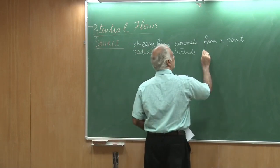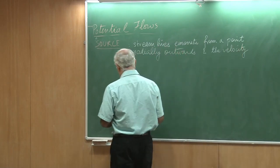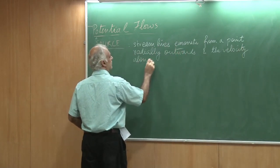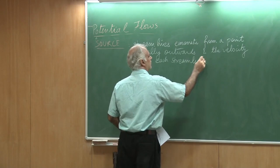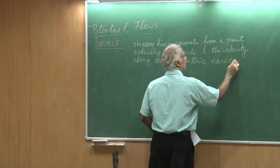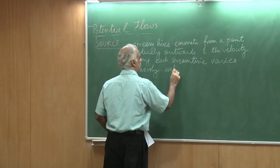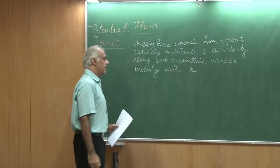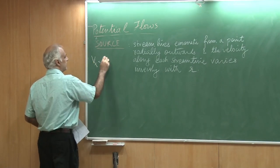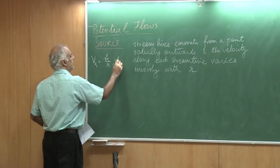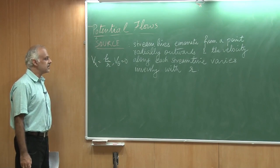And the velocity along each streamline varies inversely with R. So the suggestion is that we can say Vr is essentially K by R and V theta is 0. We are going to use the polar coordinates to describe this flow.